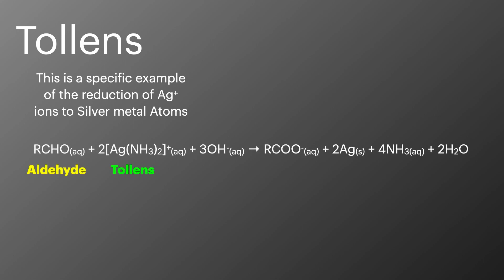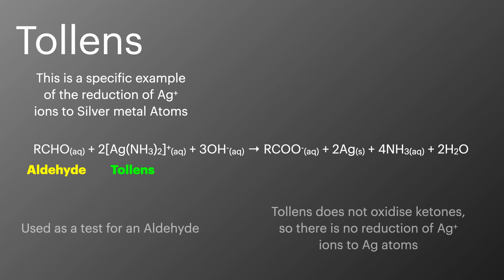Using Tollens reagent is a reaction that you'll be familiar with whilst testing for aldehydes and ketones. In this process the silver ions are reduced to silver metal atoms which form that silver mirror. The aldehyde being tested is oxidized through to a carboxylic acid. Because ketones can't be further oxidized it's not possible for silver ions to be reduced which means it's only a positive test for an aldehyde.